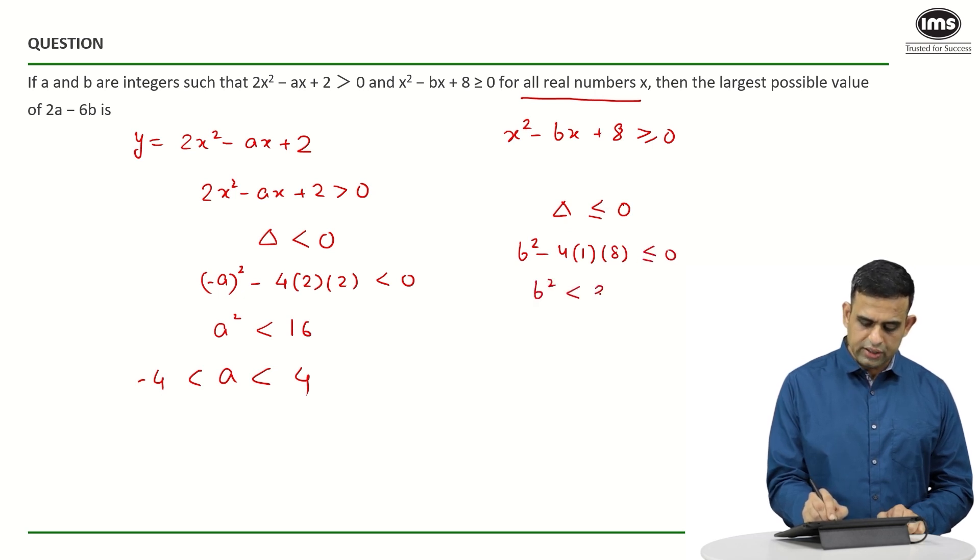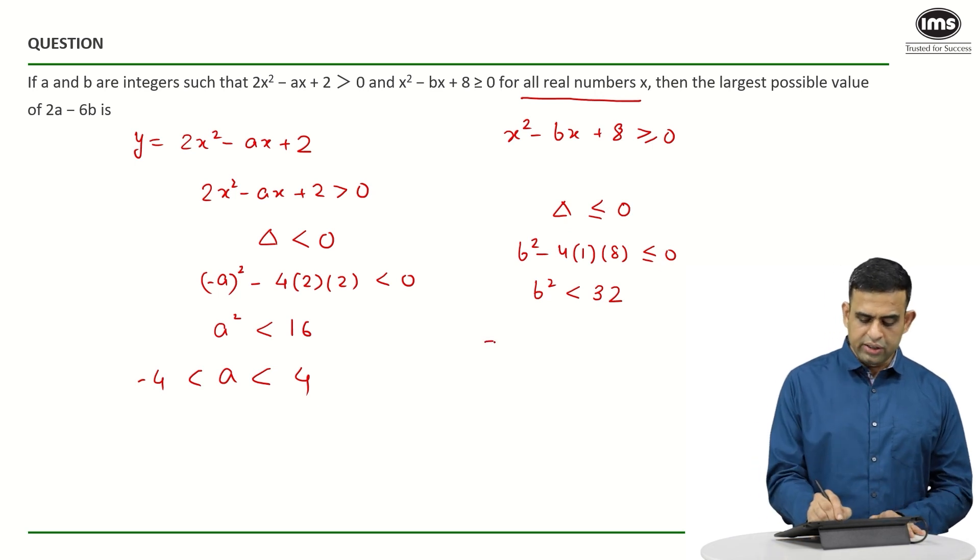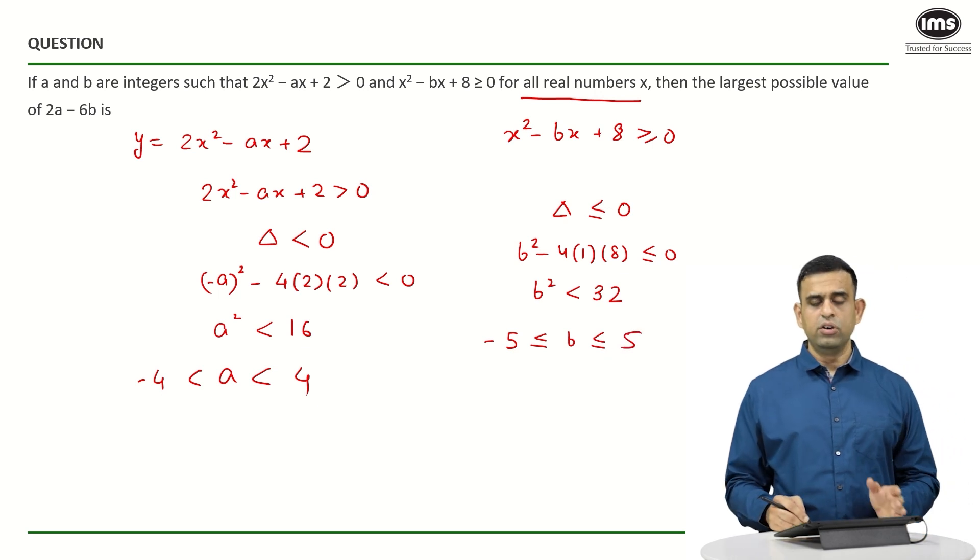So b² less than 32 and here if you can say the value of b if I want the integer numbers first, I could have told from minus 5 to plus 5.